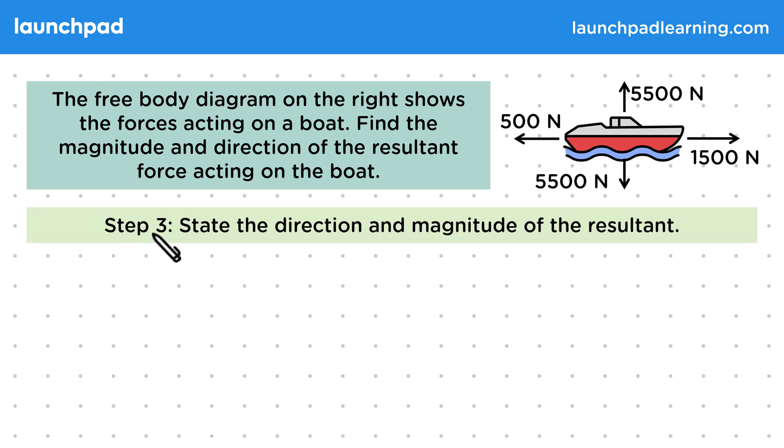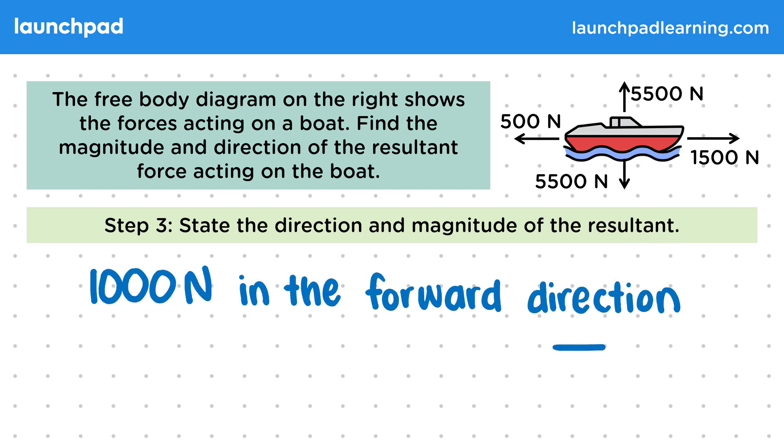Then finally for step three, we need to state the direction and magnitude of the resultant. And that is 1000 Newtons in the forward direction. And this is because the vertical forces are balanced and the force to the right is greater than the force to the left.